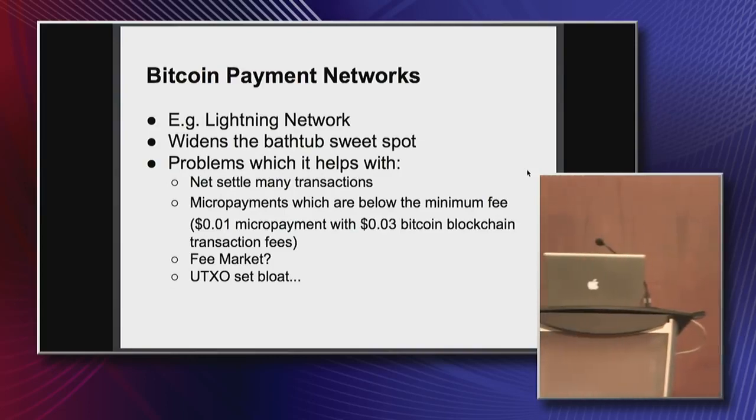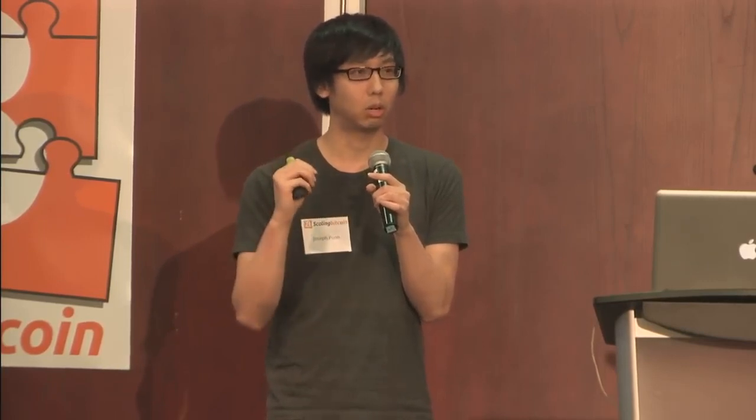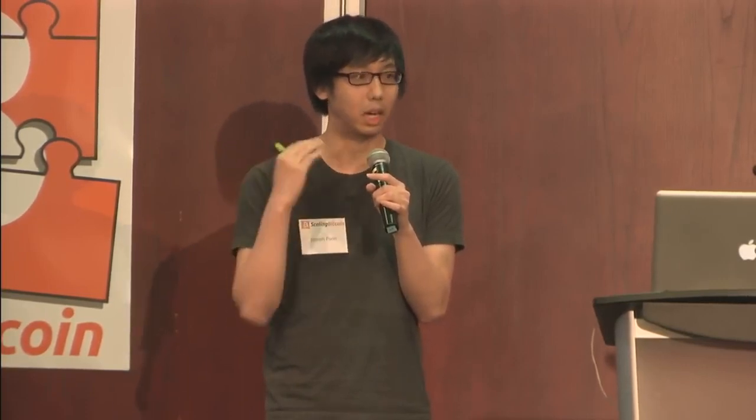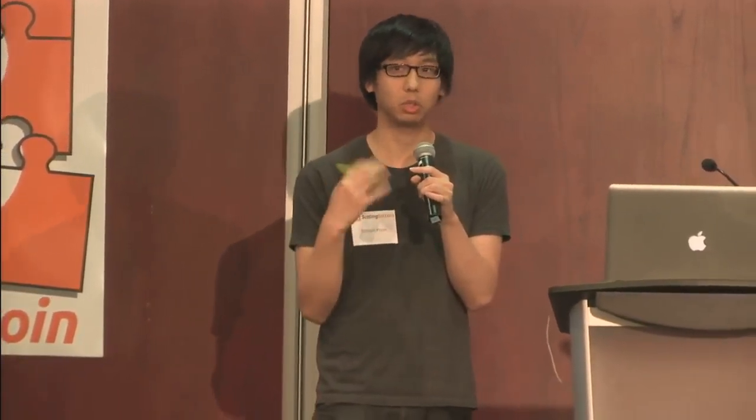An example of expanding this bathtub is what we've been working on called the Lightning Network. The idea is that even if you're not picking the right point — maybe it's a little bit low — and you need to mitigate problems where validation starts getting really complicated, you can still use Bitcoin and have your own private keys. The key thing it helps with is net-settling many transactions, especially micropayments. One blockchain transaction can be the net sum of many hundreds, thousands, or millions of transactions.